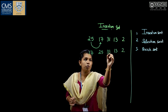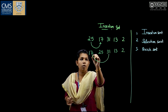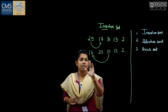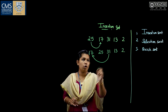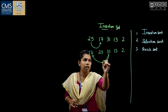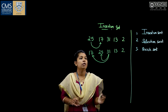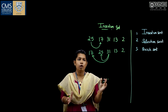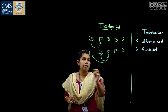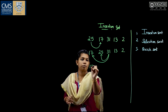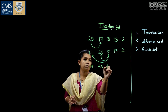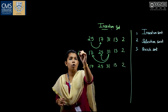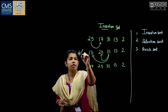Next, compare 31 with 17. Since 17 is less, no operation is performed. Then 31 is compared with 25. Since 25 is again less than 31, there is no operation. This is the output of the first iteration.